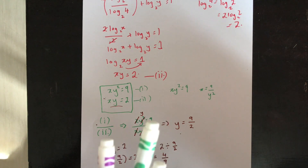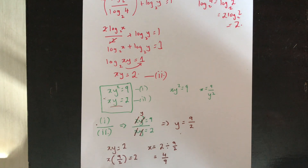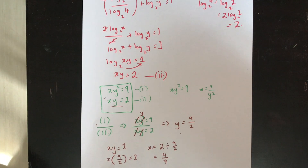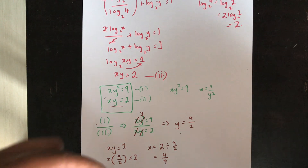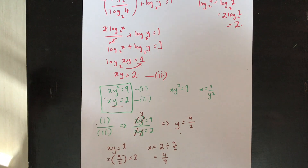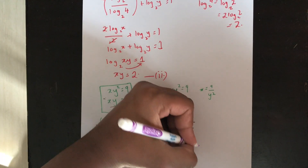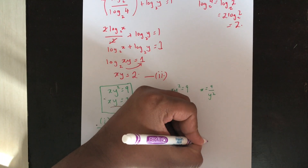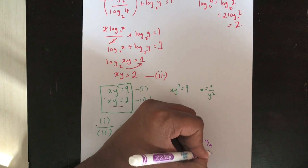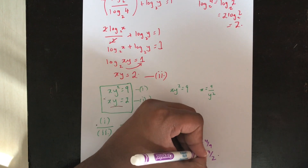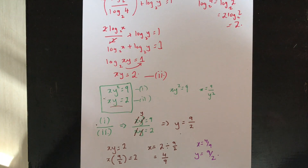So for this system of simultaneous logarithmic equations, the value of x equals 4 over 9 and the value of y equals 9 over 2, and we have solved the equation.